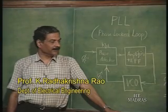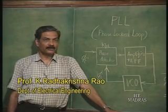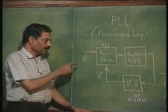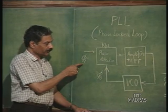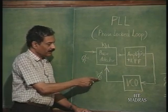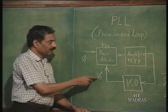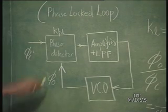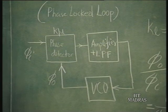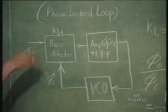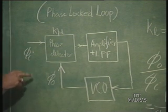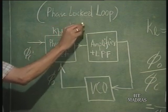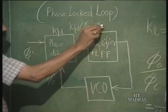In the last classes, we had seen how the phase locked loop works as a phase follower. If phi_i is the input phase and phi_naught is the output phase, phi_i minus phi_naught being the phase detector input, then the output of the phase detector is going to be a DC average which corresponds to Kpd into phi_i minus phi_naught.